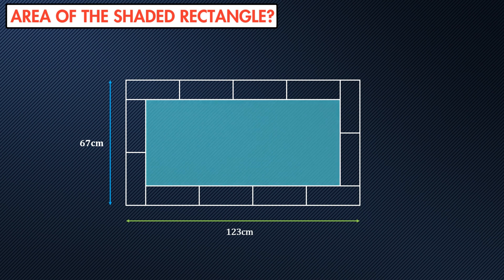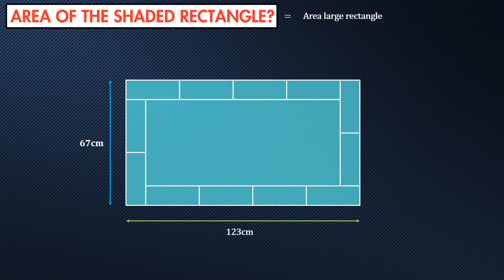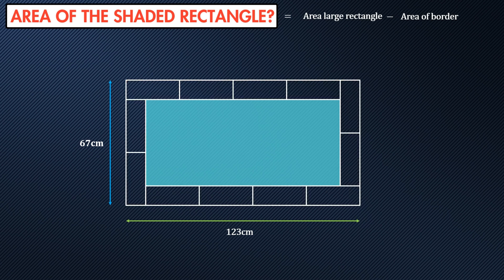The general formula would be the area of the large rectangle and we can take away the area of the border which is made up of 12 identical tiles. The large rectangle is the length times the width. We can take 123 times 67 and that gives us an area of 8,241 square centimeters.